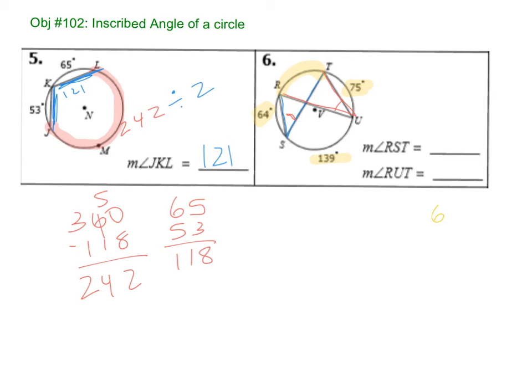So let's see. 64, 75, and 139. Let's see what we get. That's 9 plus 9 is 18. Carry the 1. That's 14, 15, 16, 17. Carry the 1. Alright, so 278. Subtract that from 360. Our entire circle. 282. So this is 82.